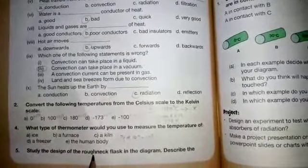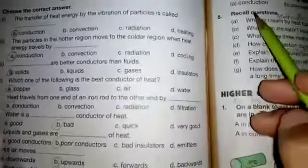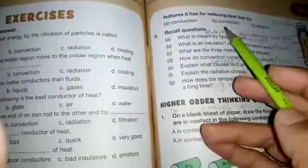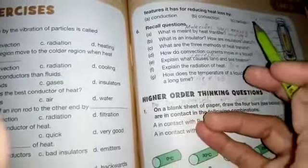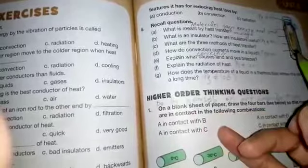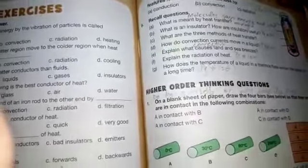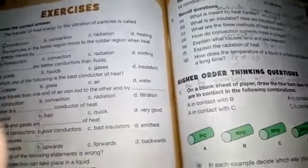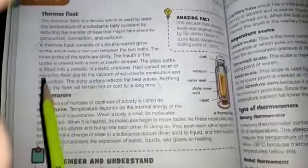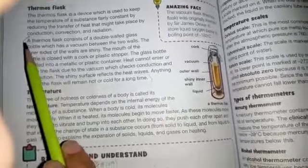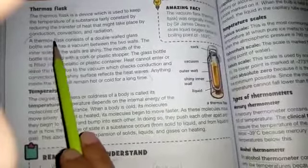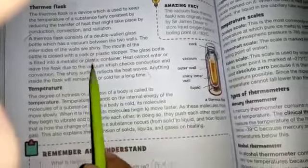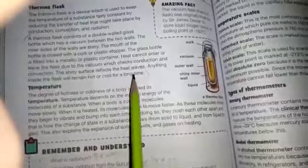The next question is: study the design of the thermos flask in the diagram, describe the features it has for reducing heat loss by conduction, convection, and radiation. You have to consult page number 106. Page number 106, start writing answer from the second passage: a thermos flask consists of a double wall and keeps liquid hot or cold for a long time.